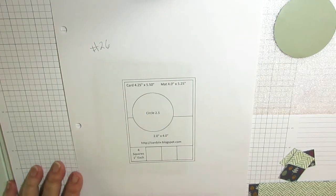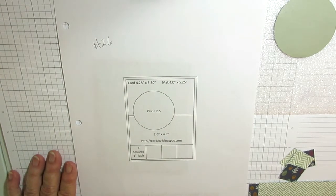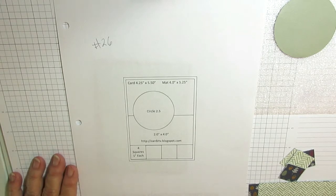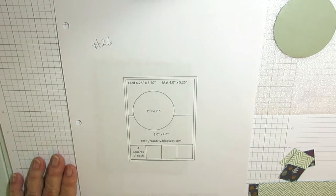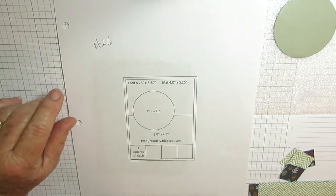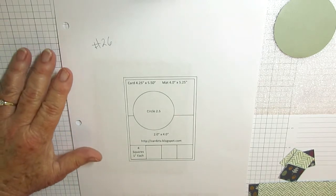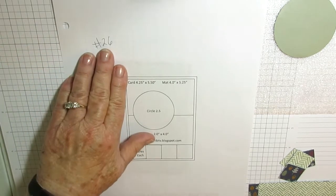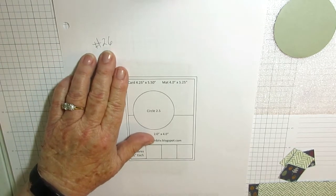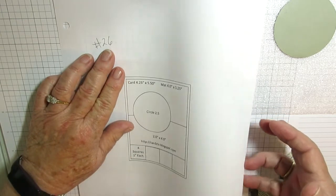I'm going to do a card for you this morning. My inspiration for the design is from cardstv.blogspot.com. She has a section on her page called Kit and Caboodle, and these are sketches. She has 30 or more. I'm going to use sketch number 26 from her sketches today.